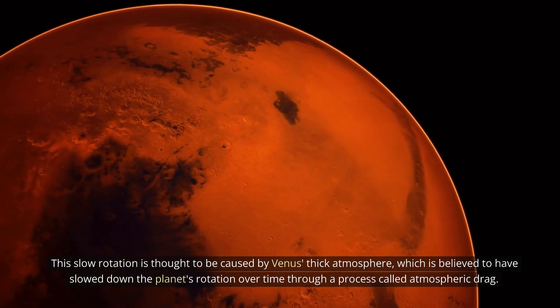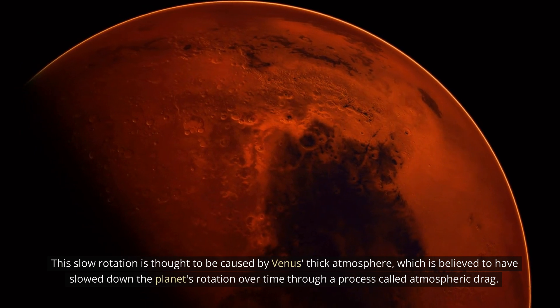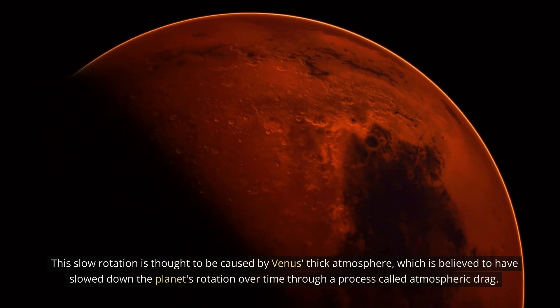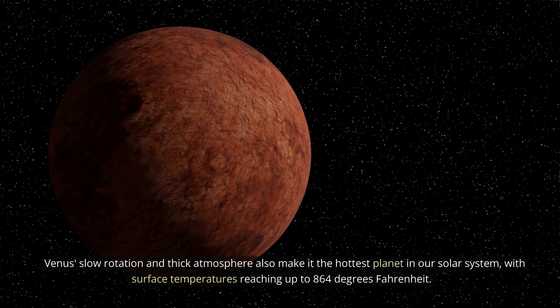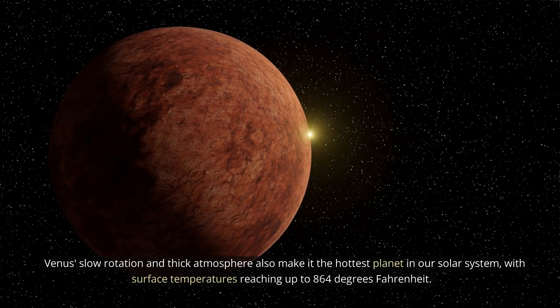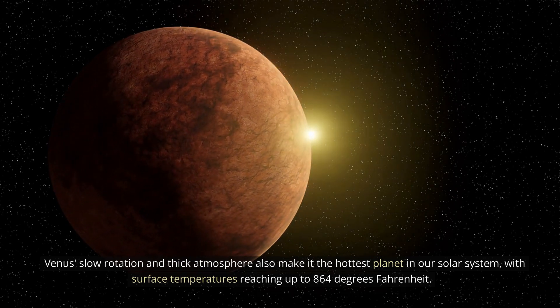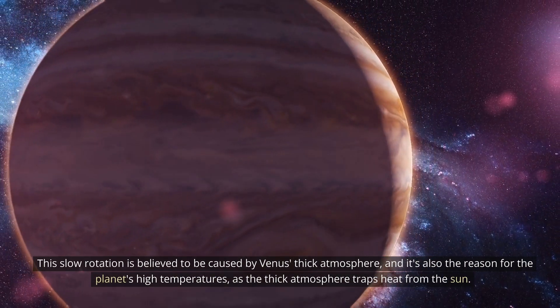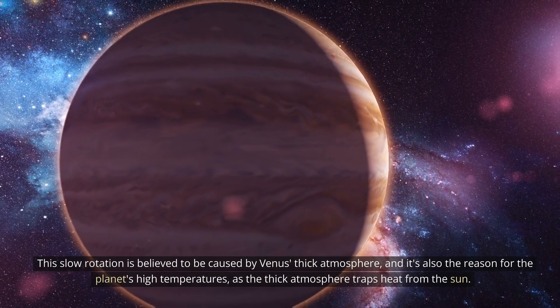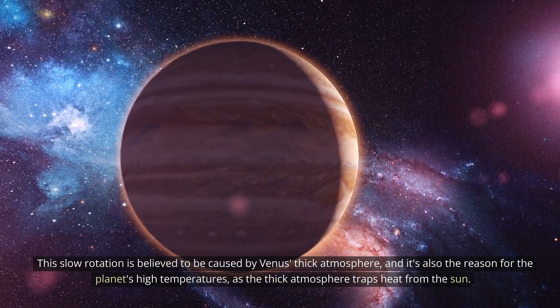This slow rotation is thought to be caused by Venus's thick atmosphere, which is believed to have slowed down the planet's rotation over time through a process called atmospheric drag. Venus's slow rotation and thick atmosphere also make it the hottest planet in our solar system, with surface temperatures reaching up to 864 degrees Fahrenheit. This slow rotation is believed to be caused by Venus's thick atmosphere, and it's also the reason for the planet's high temperatures, as the thick atmosphere traps heat from the Sun.